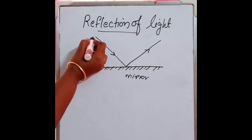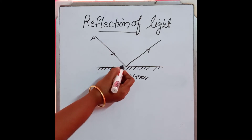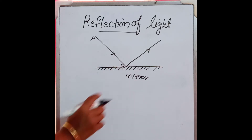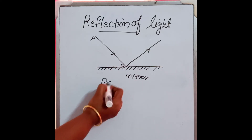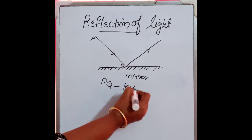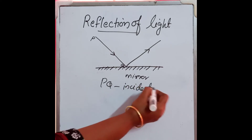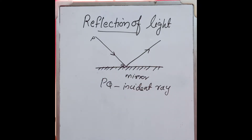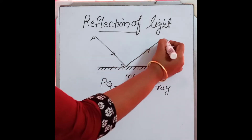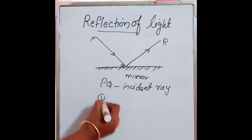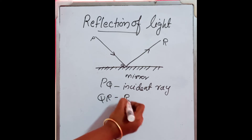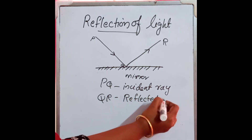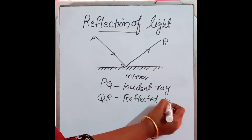Here, the ray of light PQ — we can name it as PQ — is the ray that falls on the mirror. So, PQ is called the incident ray: the ray which is incident on the mirror. Then QR is called the reflected ray.